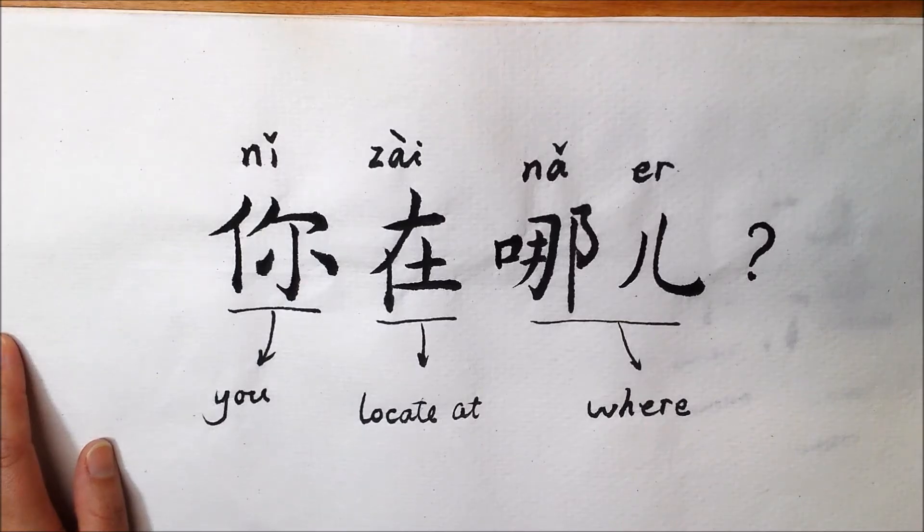Zai can work as a verb, which means to locate at or to exist. For example,